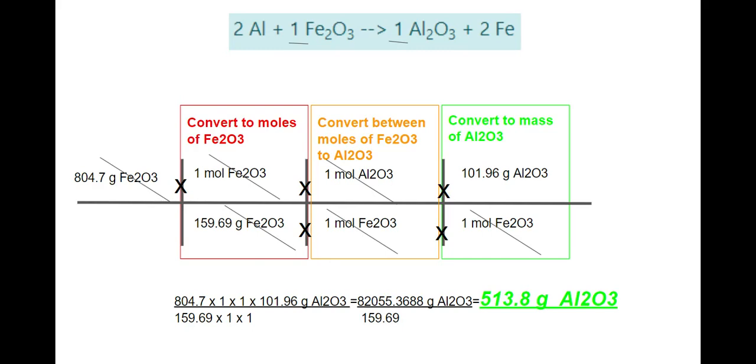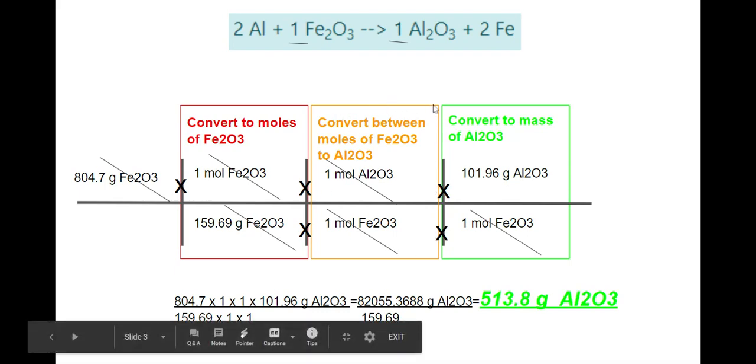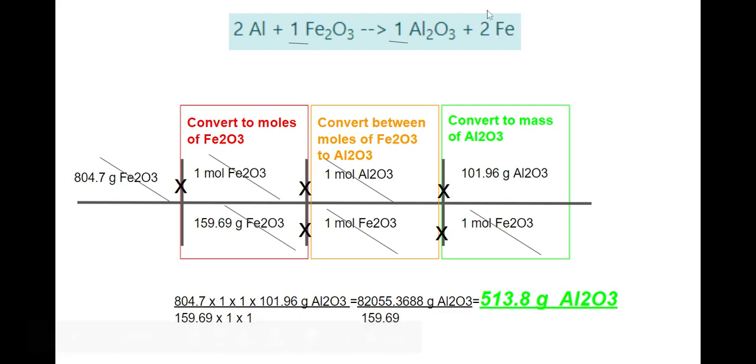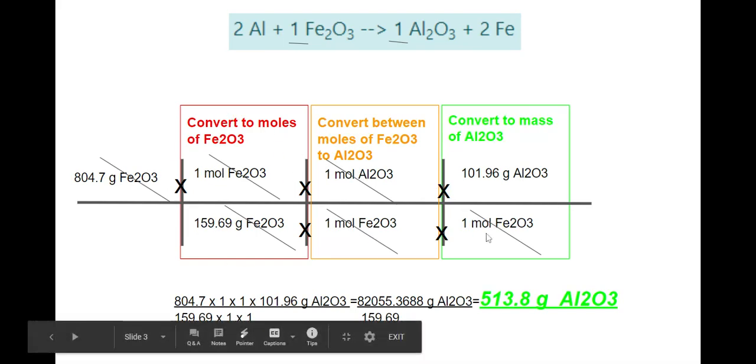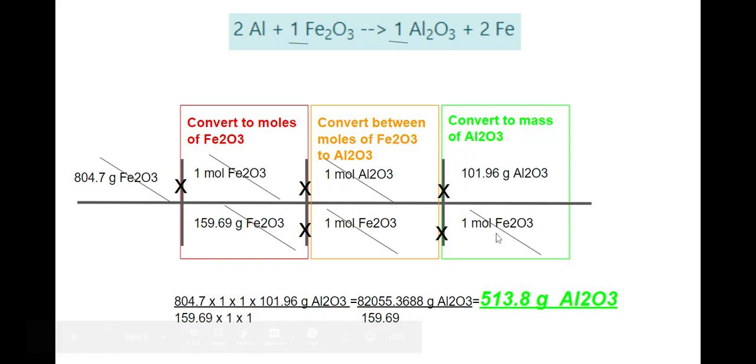This is just one specific example. If it had asked for just moles of Al2O3, we would have been able to stop right here. If it had asked for mass of iron, we would have iron right here, 2 moles of Fe. And then, if it was a mass of iron, we would need 1 mole of iron and then the molar mass of iron right here. The only real new thing is this guy in the middle, where we have to convert between substances. Otherwise, you have converted between moles and mass. You can convert between mass and volume and particles.